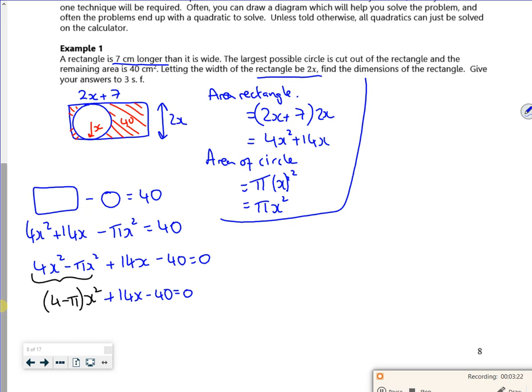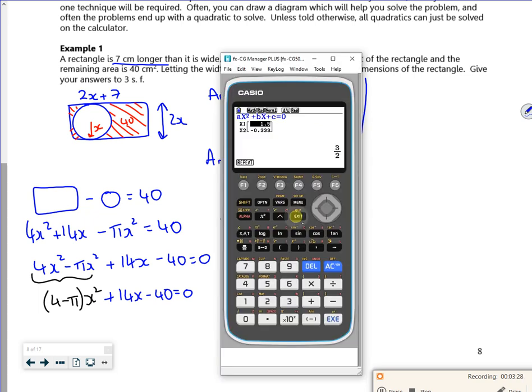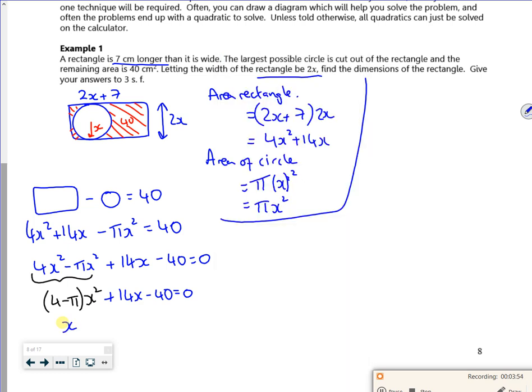So a is 4 minus π, b is 14, c is minus 40. So that's what I've calculated for that there. So a is 4 minus π, so that's shift and 1. Then I've got 14 and I've got minus 40. So it gives me 2.48 and minus 18.79. So remember that, 2.48 and minus 18.79.